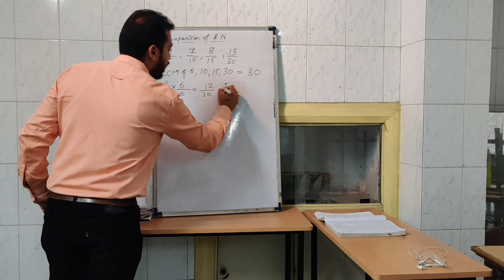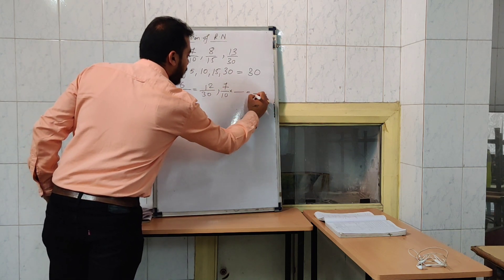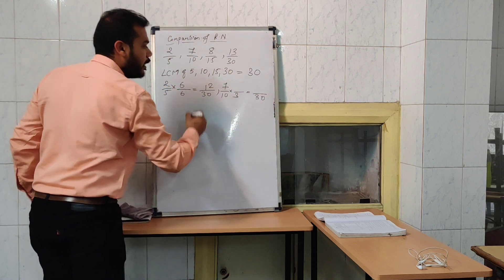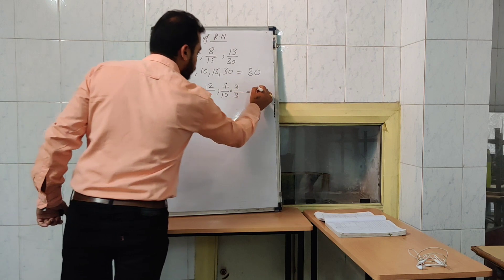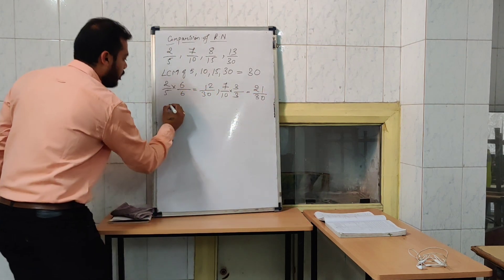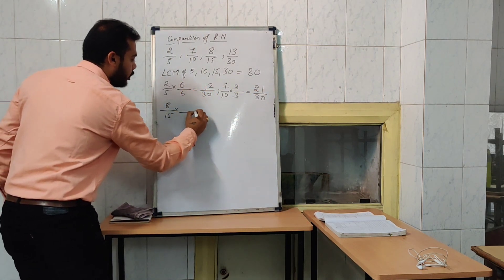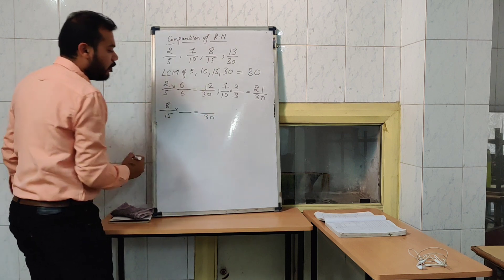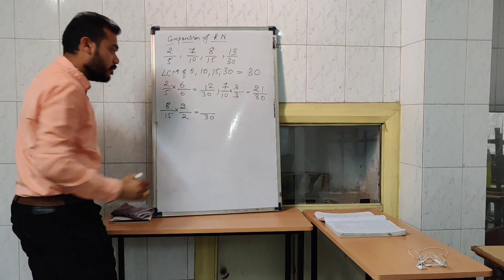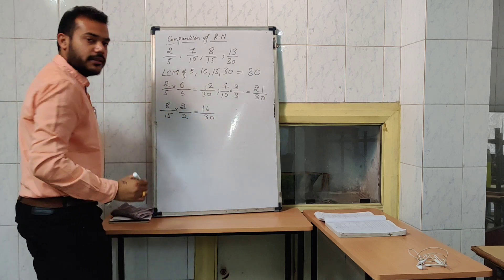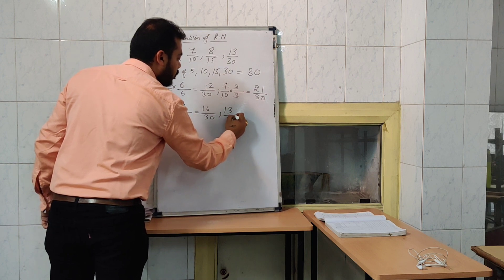Then for 7 by 10 — what do we multiply on 10? That is 3, so multiply in 7 also. For 8 by 15 — what do we multiply on 15? That is 2, so multiply on 8 also. That will become 16 by 30.